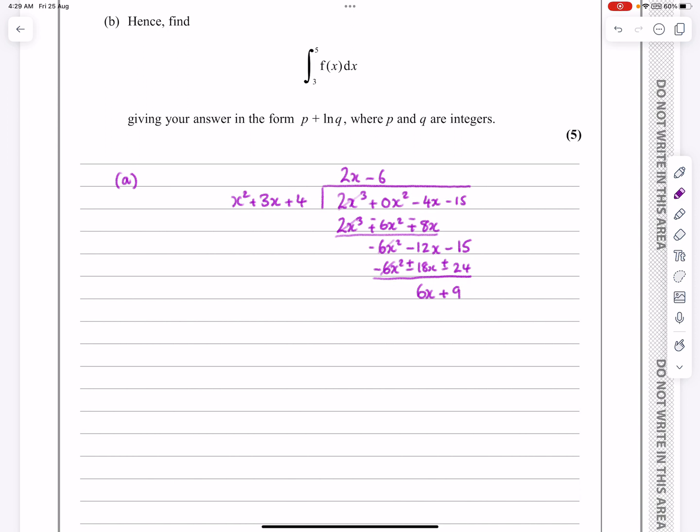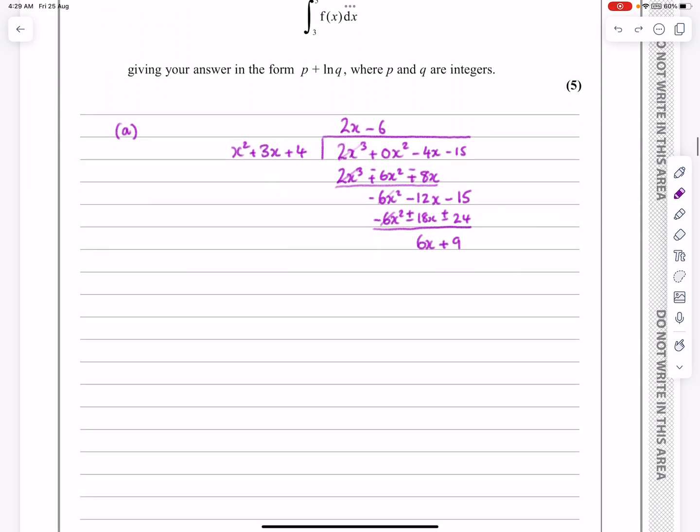And because I'm at the stage where this has reached a constant, or because I'm at the stage where x squared doesn't go into 6x, we now say we've finished the long division. I can now write this in the format that I wanted. So fx is equal to... That's going to be my quotient. That's my 2x minus 6 there.